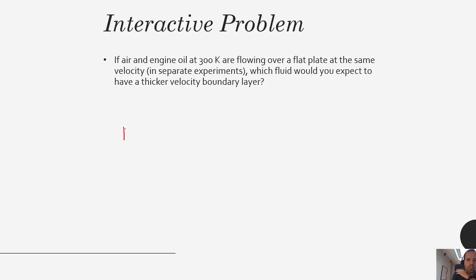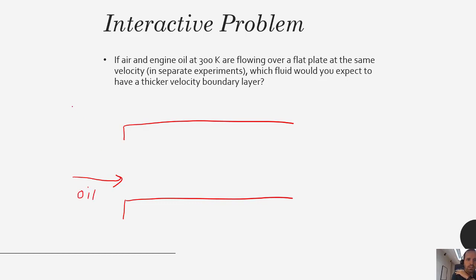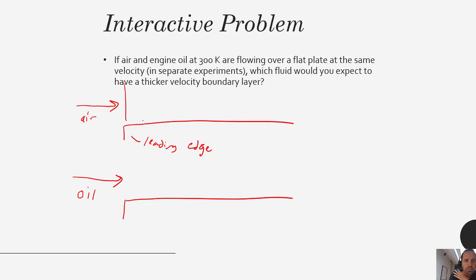So here we have flow over a flat plate — in one experiment we have oil, and in another we have air. When this bulk velocity or free stream hits the leading edge of the plate, we know there are going to be viscous forces. There is a no-slip boundary condition at the bottom, so we have essentially zero velocity right at the solid-fluid interface. The fluid has a viscosity which creates shear stresses, so this stationary solid grabs onto the fluid and slows it down. Then this bottom layer grabs onto the next layer, and you see this velocity profile that forms.